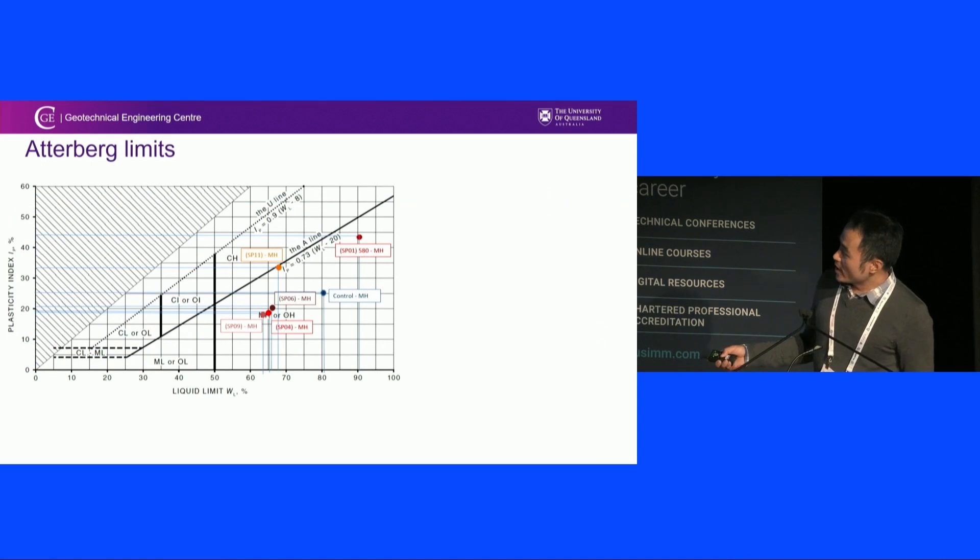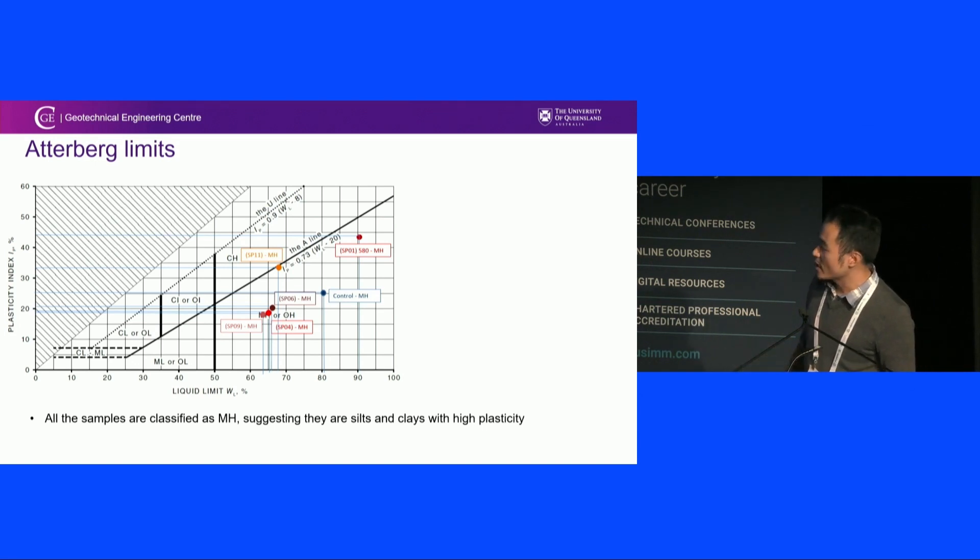We basically go through this series of lab testing to identify what is actually the differences. We look at the Atterberg limits. The control has a liquid limit of 80% and the plastic index is about 25%. If you look at how the data is being spread around, it has slightly different, but nevertheless, it's all being considered as MH, which means that it's rich in silts and clay with very high plasticity. Does it really change the material from A to B? Not really.